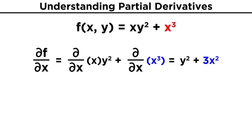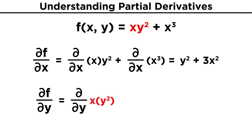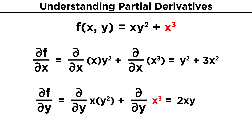Then for the second term, we bring down the three and reduce the power by one, leaving us with 3x squared. Now for df dy, we treat x as a constant, so two xy. The second term does not depend on y, so this is just a constant, and the derivative of a constant is always zero, so we are left with two xy for our partial derivative df dy. These are the rates of change in the x and y directions for our function.